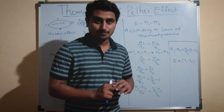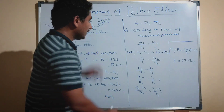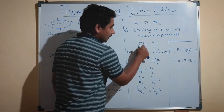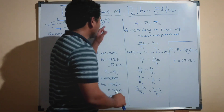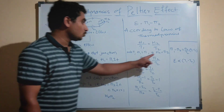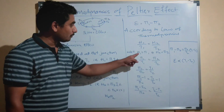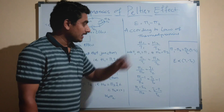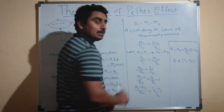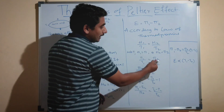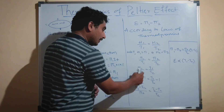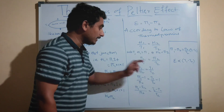According to the law of thermodynamics, at the hot junction we have the relation H1 / T1 = H2 / T2. We know that H1 = Pi1 and H2 = Pi2. Substituting these values, we get Pi1 / T1 = Pi2 / T2. Rearranging, Pi1 / Pi2 = T1 / T2.